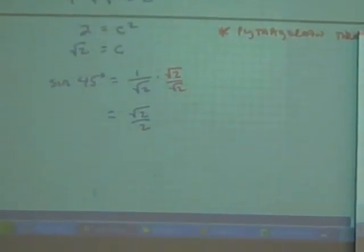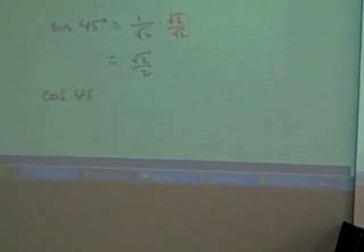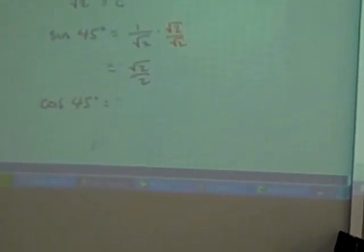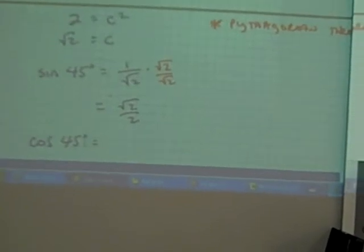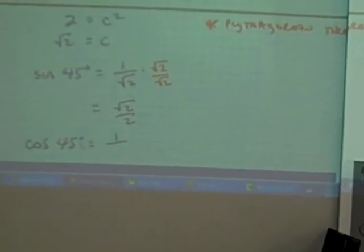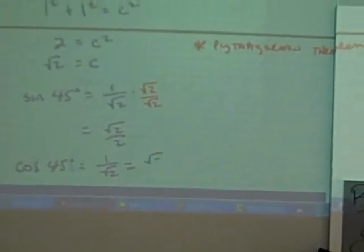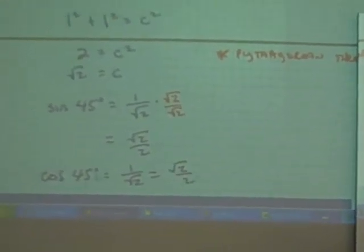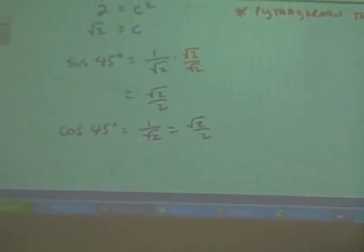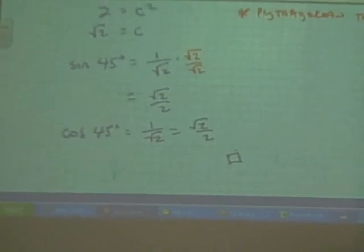Do the cosine the same way. Look at the triangle. What's the cosine of 45 degrees? Square root of 2 over square root of 2. Would you show that equals square root of 2 over 2? That is a lot easier. Not too easy.